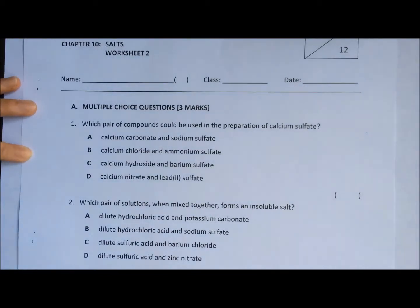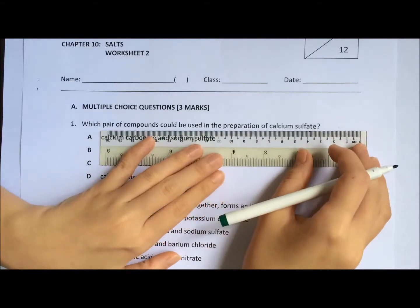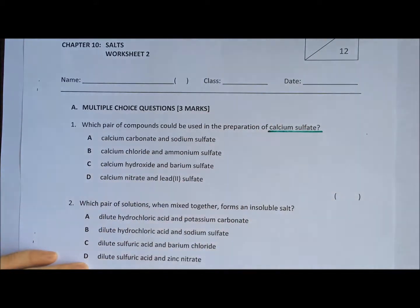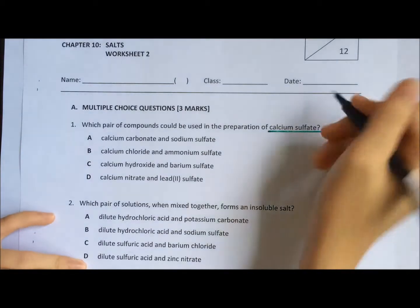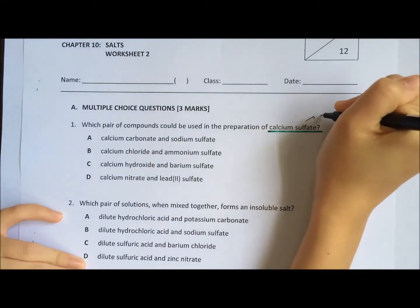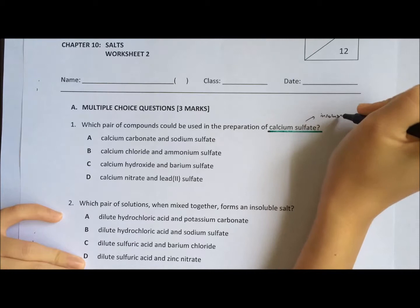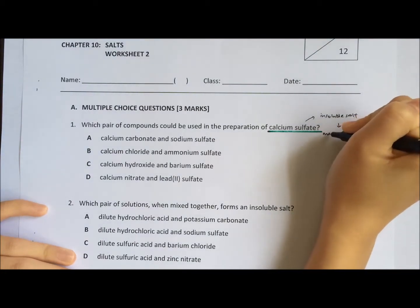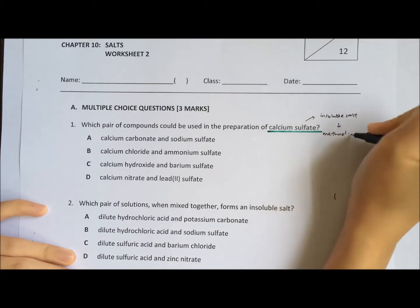Salts Worksheet 2, Question 1. To prepare calcium sulphate - remember, calcium sulphate, these are insoluble salts. So if it is insoluble salt, the method would be precipitation.